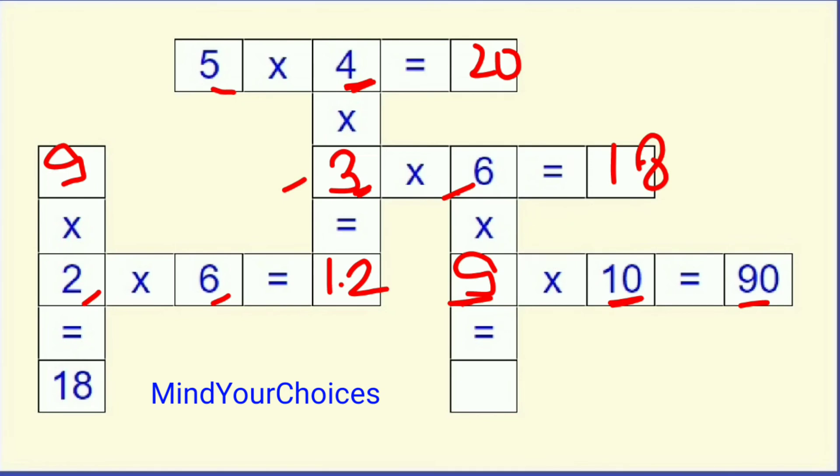At last, 6 times 9 is 54. And our answer is 54, which is the last one.